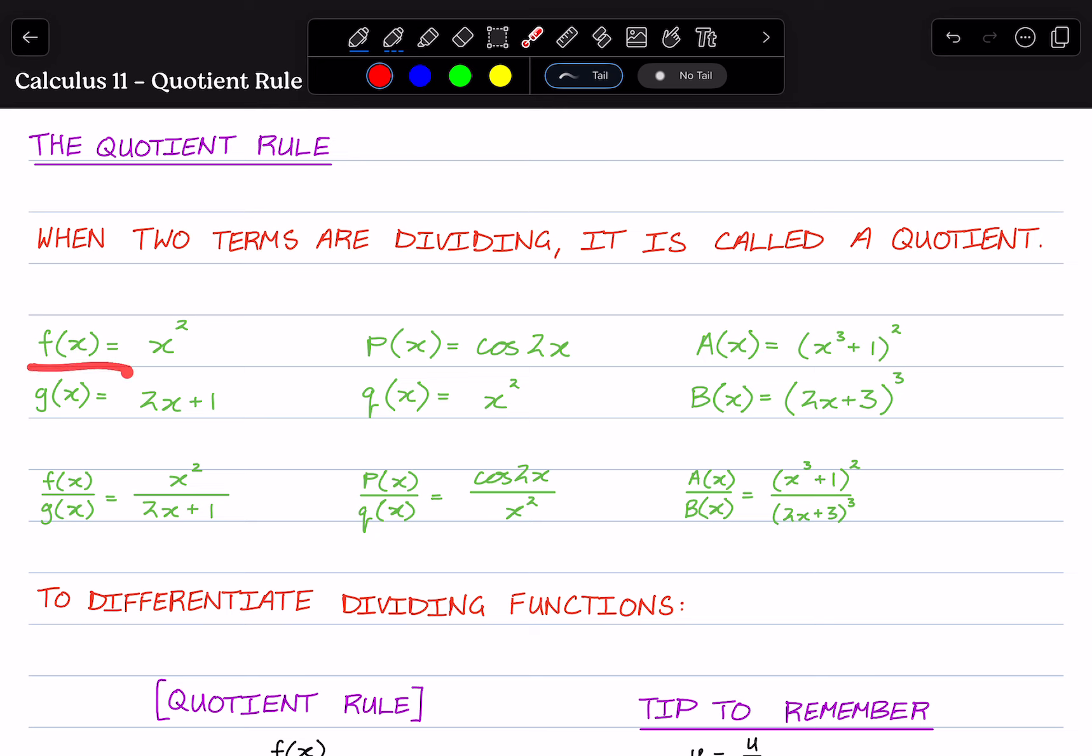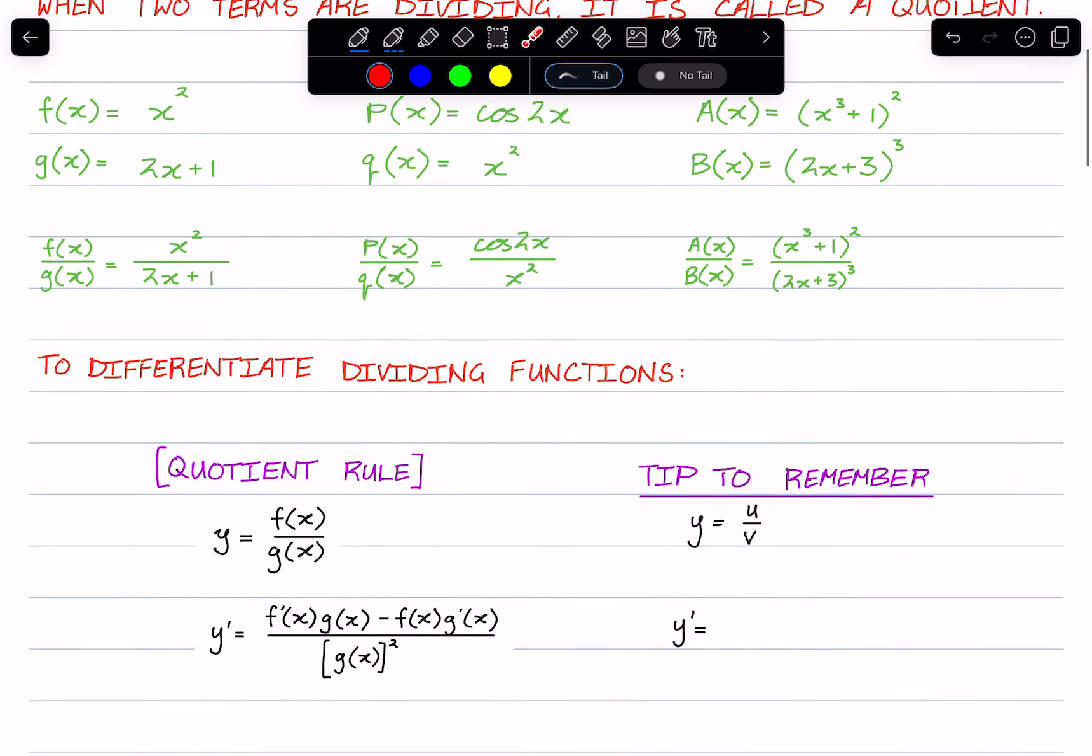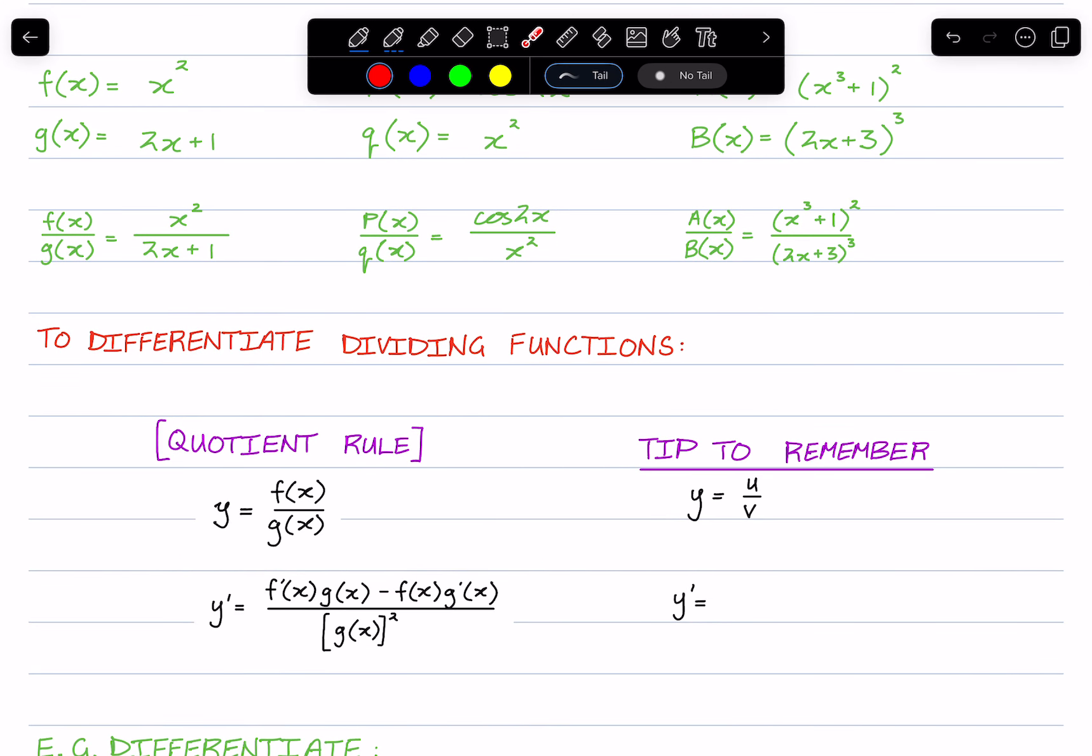So for all of these—f(x) over g(x), p(x) over q(x), A(x) over B(x)—all of these are examples of a quotient. To differentiate dividing functions, we use the quotient rule.